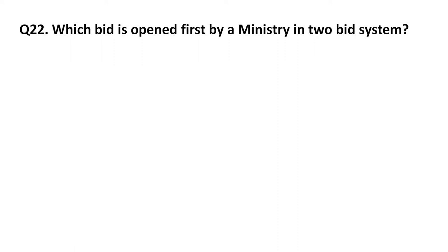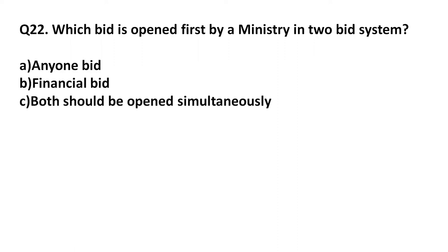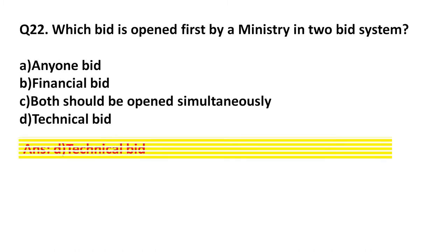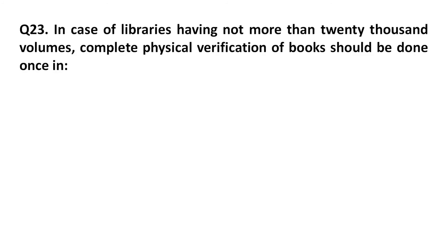Question 22: Which bid is opened first by the Ministry in a two-bid system? Option A: Any one bid. Option B: Financial bid. Option C: Both should be opened simultaneously. Option D: Technical bid. Answer: Technical bid.